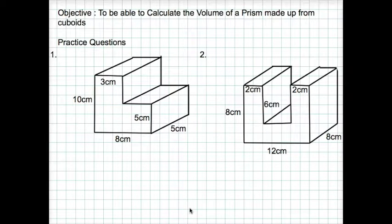Hi there. OK, let's go through these now together. So what we're trying to do is we're trying to find the volume of these prisms. Now these prisms are both made up of various cuboids.